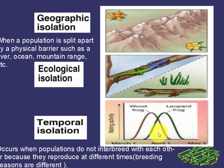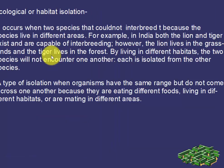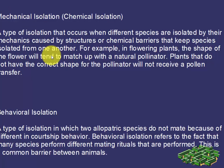Ecological isolation, also called habitat isolation, occurs when two species cannot interbreed because they live in different areas — that means they occupy different habitats. For example, in India both the lion and tiger exist and are capable of interbreeding; however, the lion lives in grasslands and the tiger lives in the forest. By living in different habitats, the two species will not encounter one another. When organisms share the same range but do not meet because they eat different foods, live in different habitats, or mate in different areas, this is called ecological or habitat isolation.